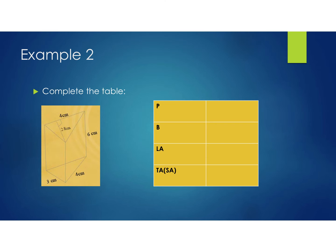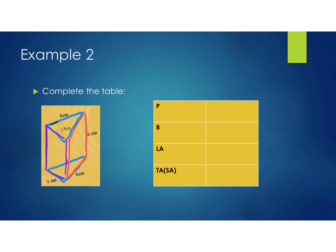For example two, we have a triangular prism with a triangle base. When it's a prism, the shape you have two of are congruent — so there are two congruent triangles. Then there are three rectangular lateral faces: one going down the side, another on the other side, and one across the back. That gives five faces total: two triangles and three rectangles. You could find the five faces separately and add them up.